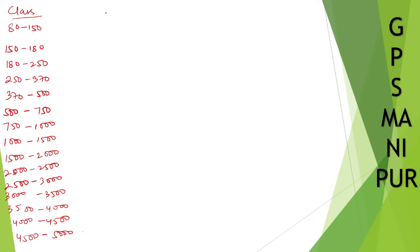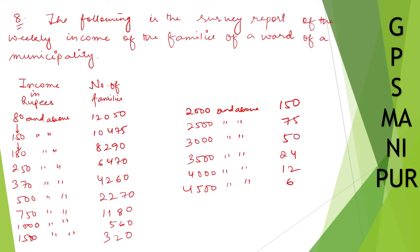Now we need to find the frequency for each class. The original data gives cumulative-style values, so for 80 to 150, we take the first number minus the second number. So 12050 minus 10475 — the first number minus the second number gives us the frequency for that class.